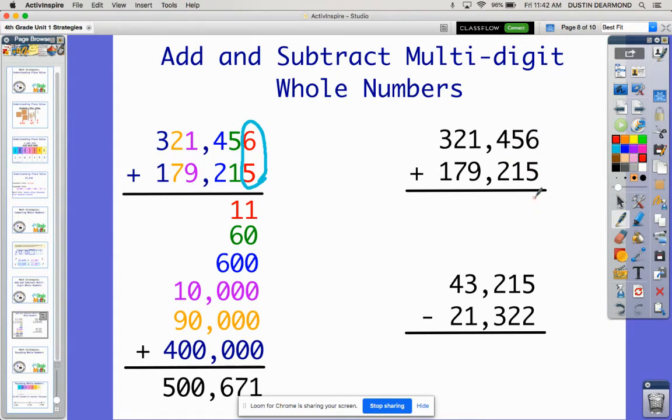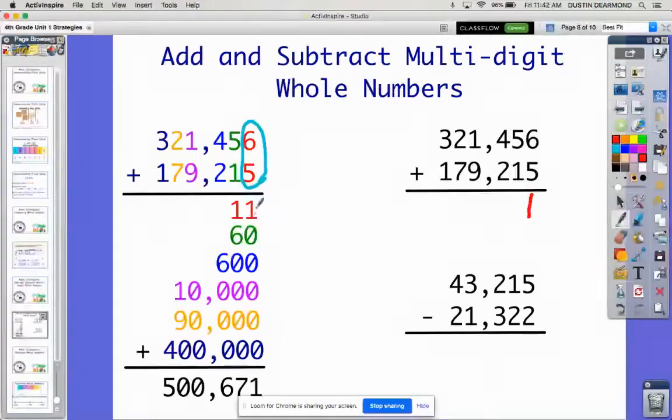6 and 5 I know is 11. But when we're doing the standard algorithm, we're only going to write down one number per place value in our answer. So my number 11, I have to break that apart into tens and ones. So instead of 11 right here, I'm only going to put down what's in the ones place, and that is that 1 right there.